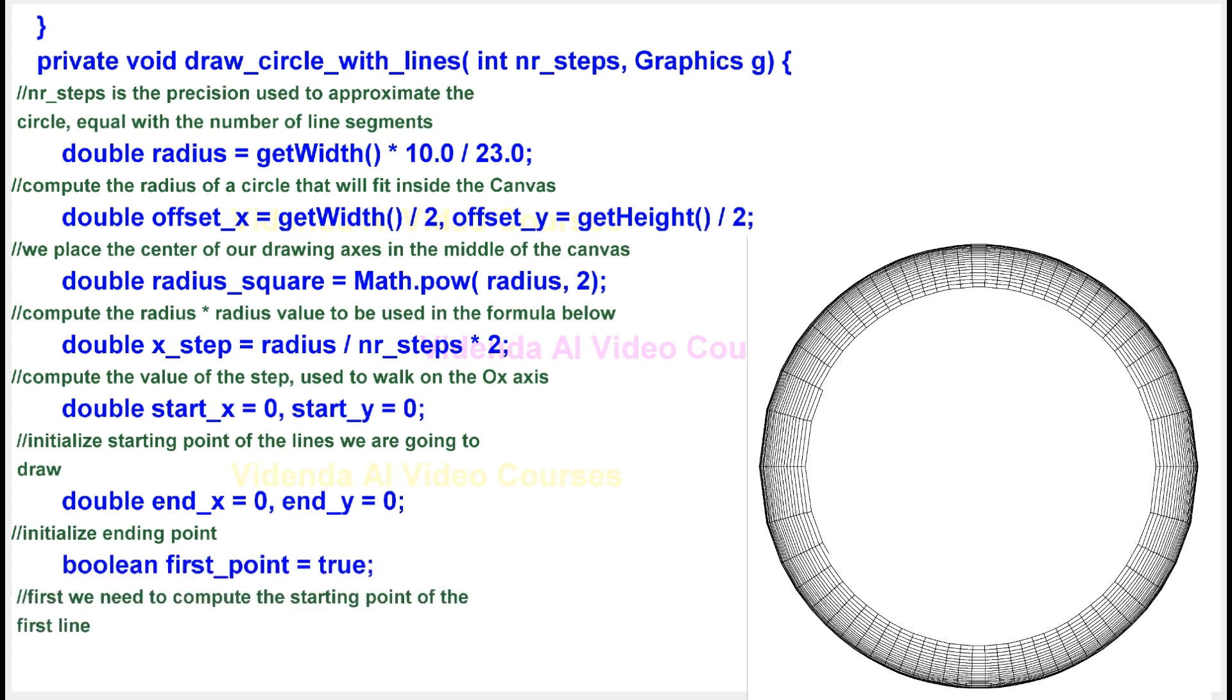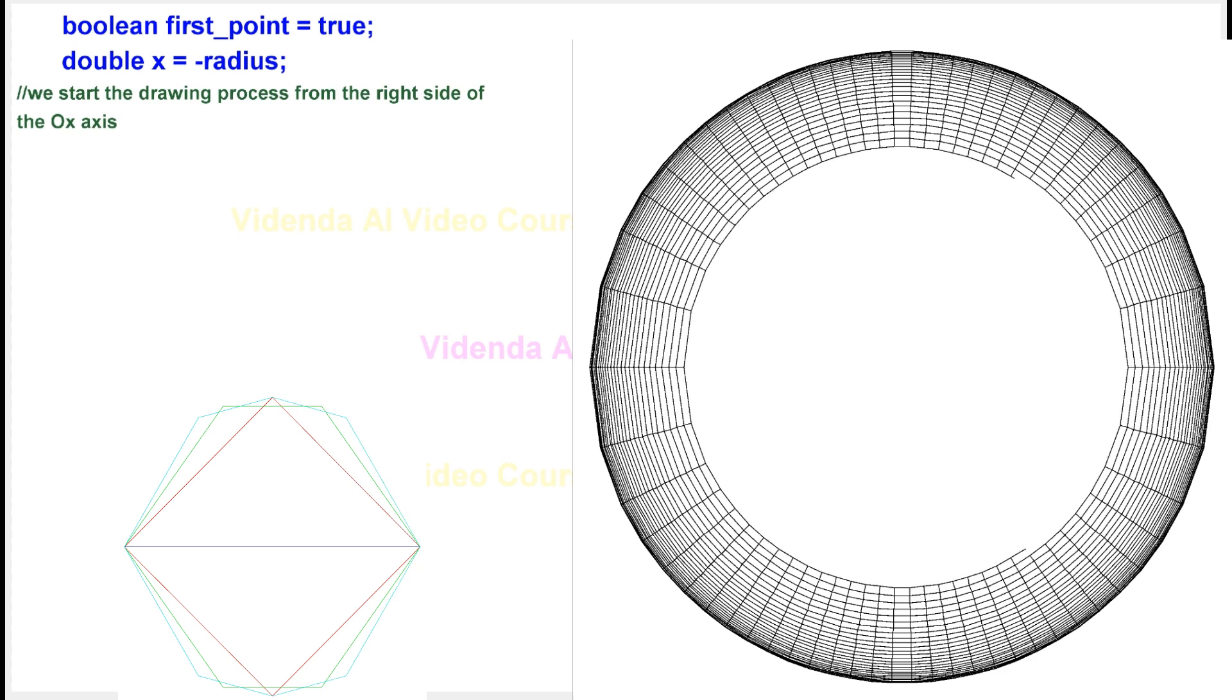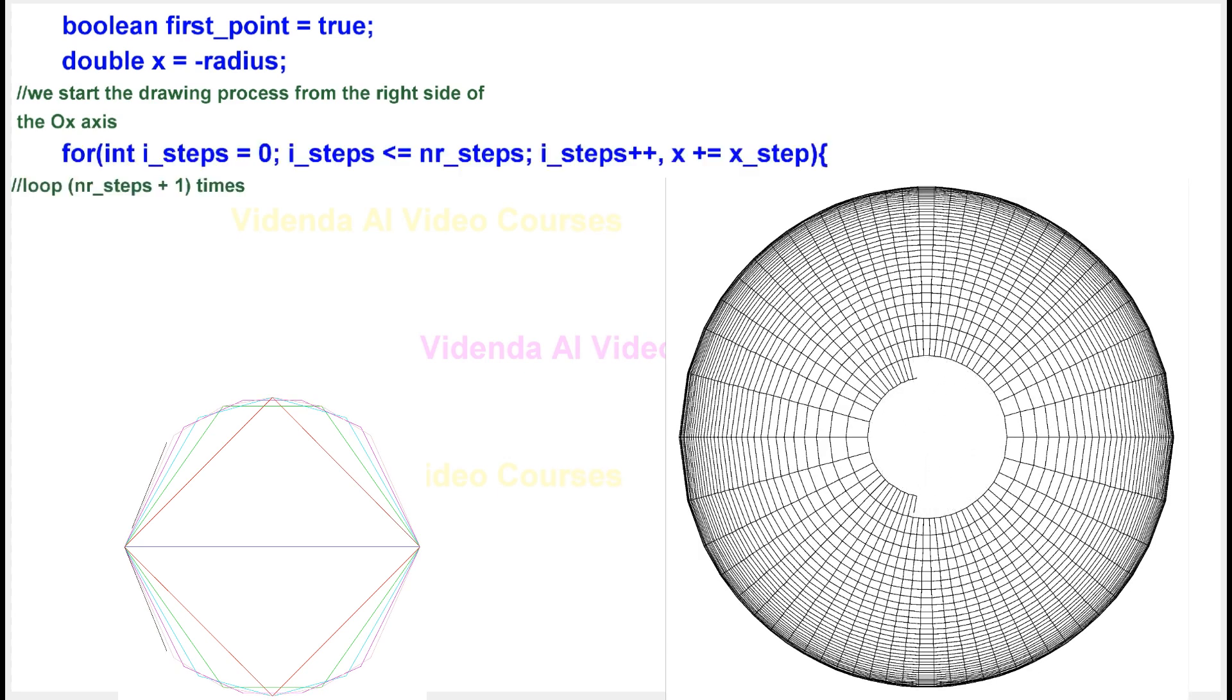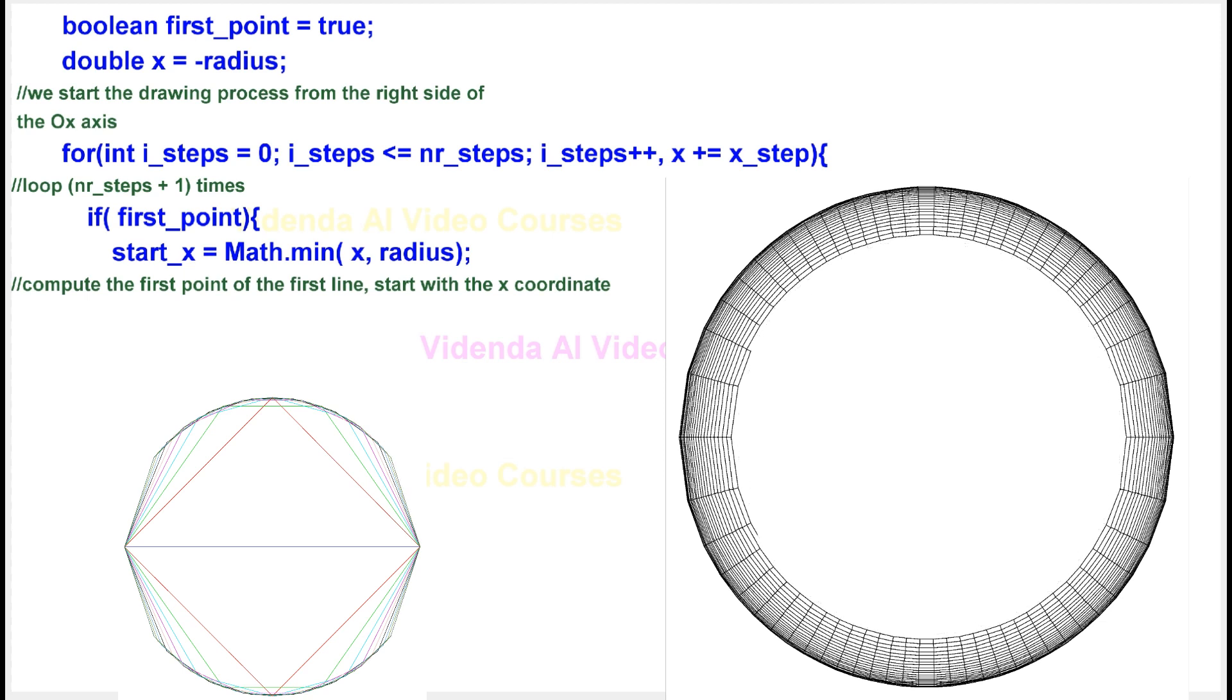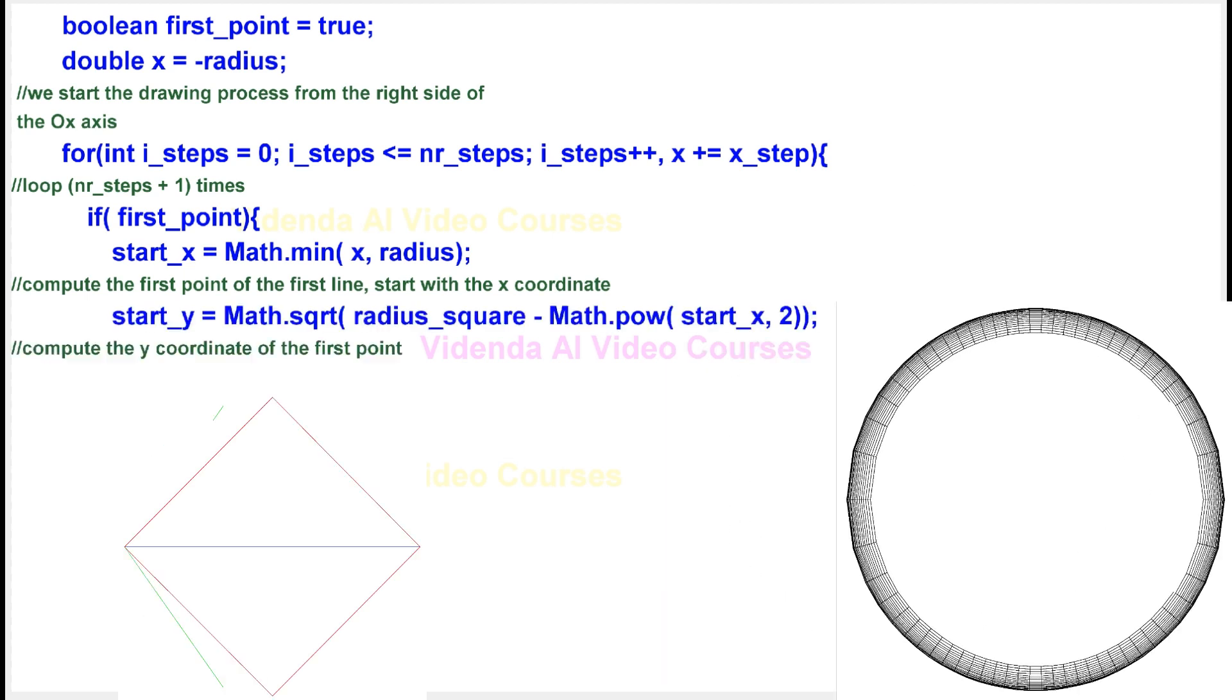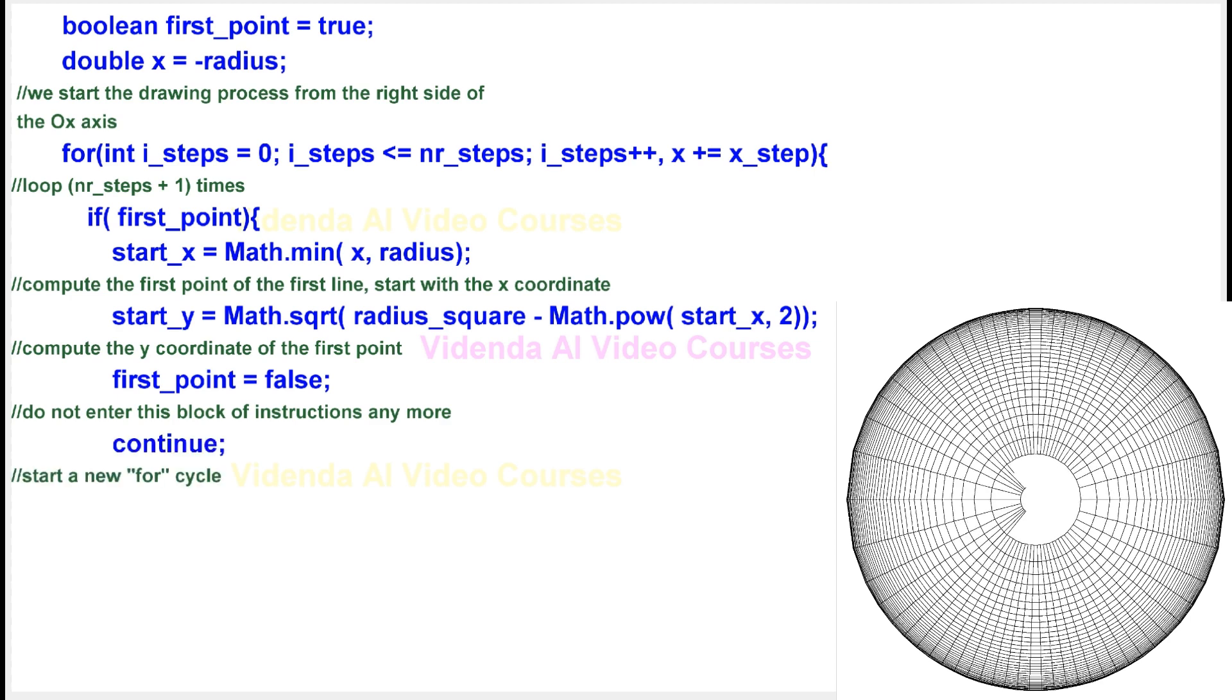First we need to compute the starting point of the first line. We start the drawing process from the right side of the aux axis. Loop nr_steps plus 1 times. Compute the first point of the first line, start with the x-coordinate. Compute the y-coordinate of the first point. Do not enter this block of instructions anymore. Start a new for cycle.